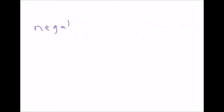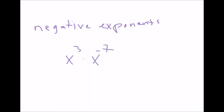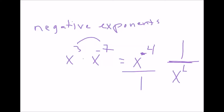Let's talk about what happens when you have a negative exponent. If you have x cubed times x to the negative 7th, when you multiply two exponents together you add the exponents, so you get x to the negative 4. Anytime you have a negative exponent, it means it's on the wrong side of a fraction — you need to put it on the other side. So x to the negative 4 really means x to the negative 4 over 1, and you flip that to get 1 over x to the 4th. Now that exponent is not negative anymore.